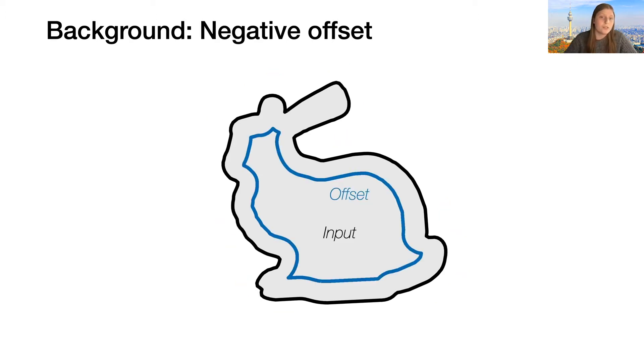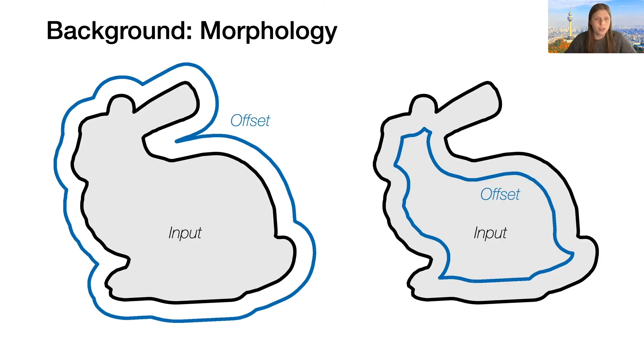But we can also define a negative offset where we do the same but the shape moves inward. We can look at these two as operations that take a shape as input and return a different shape as output, which makes them fit into the context of mathematical morphology. And instead of positive and negative offsets, we'll call them the dilation and the erosion of the input shape. Strictly speaking, this would be the dilation and erosion with a circular structuring element, but let's not get into what that means.